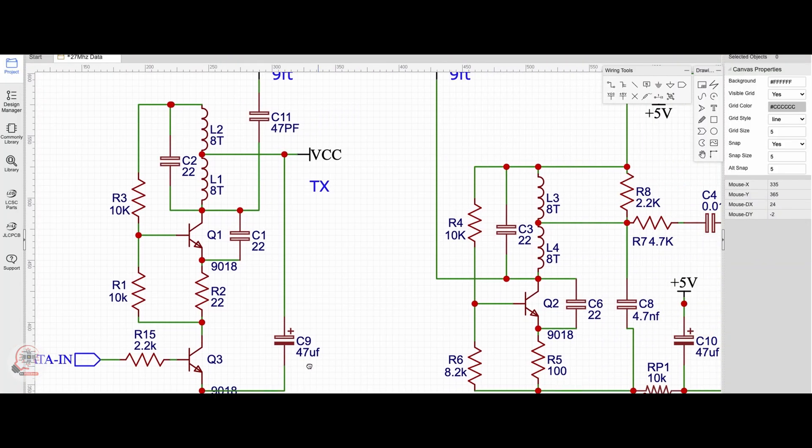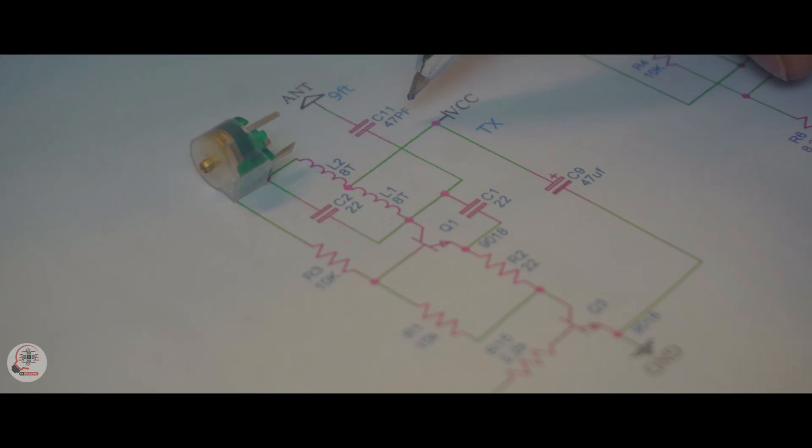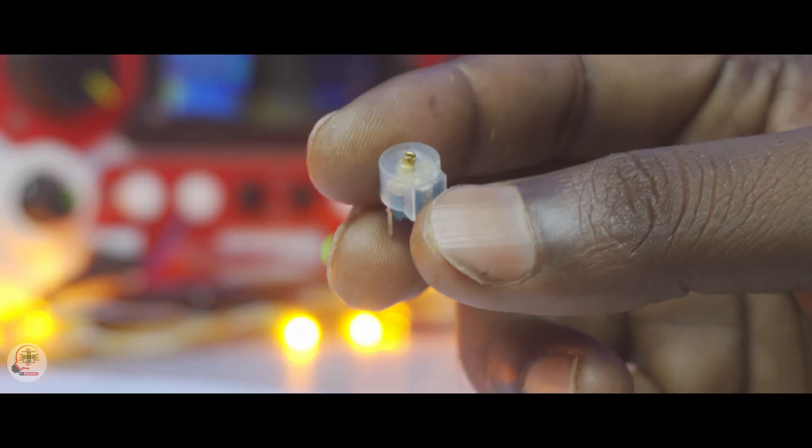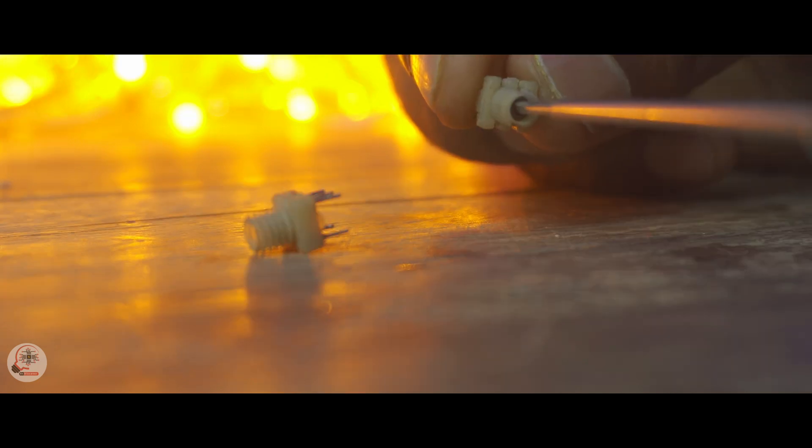But in today's video we will discuss how to transfer data via radio. And here you can see I have created an RX and TX circuit for data transfer. First of all I have removed the variable capacitor from my circuit because it is not easily available. Instead I am going to use this variable inductor here.